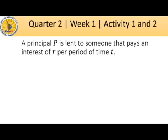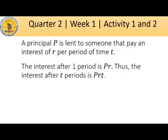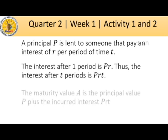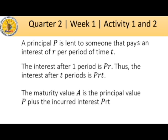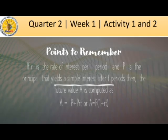A principal P is lent to someone who pays an interest of R per period of time T. The interest after one period is P times R. Thus, the interest after T periods is P times R times T. We can conclude that the future value A is computed as A equals P plus PRT, or equivalently A equals P times the quantity 1 plus R times T.